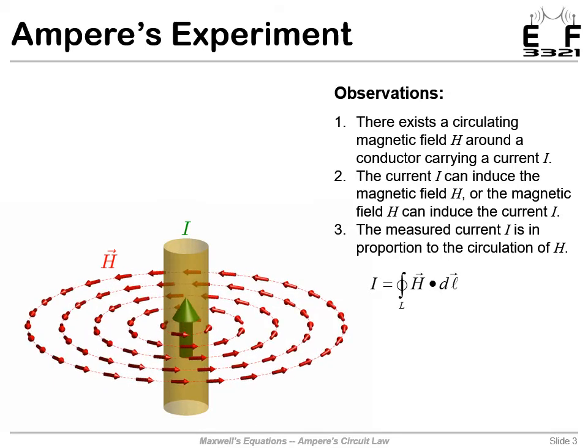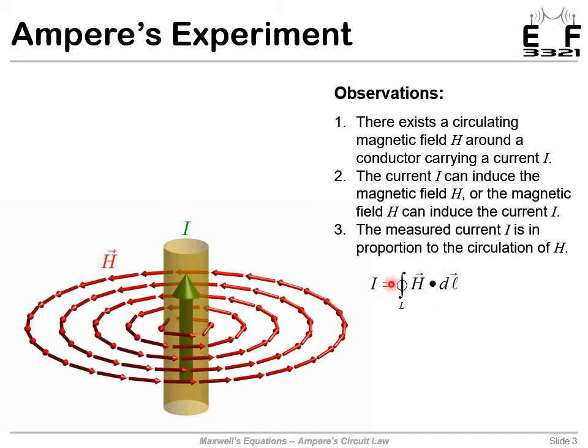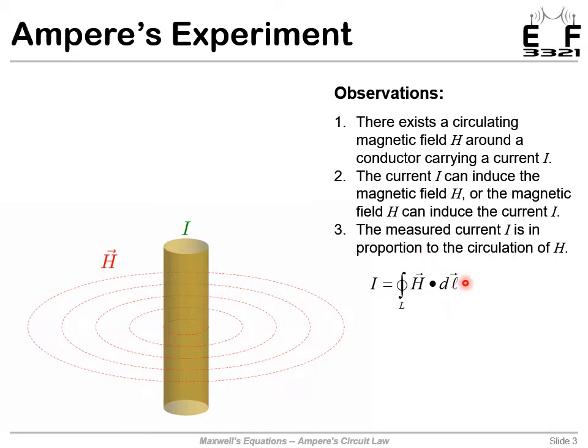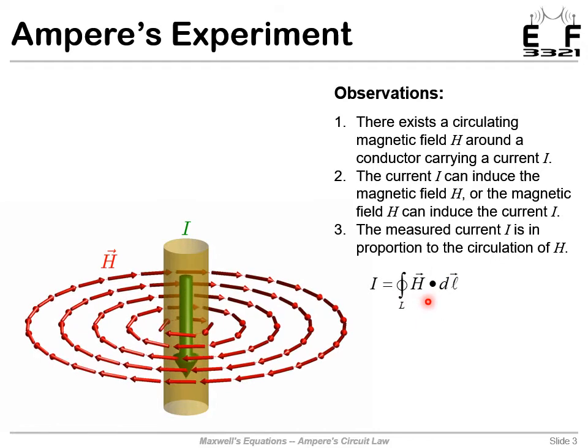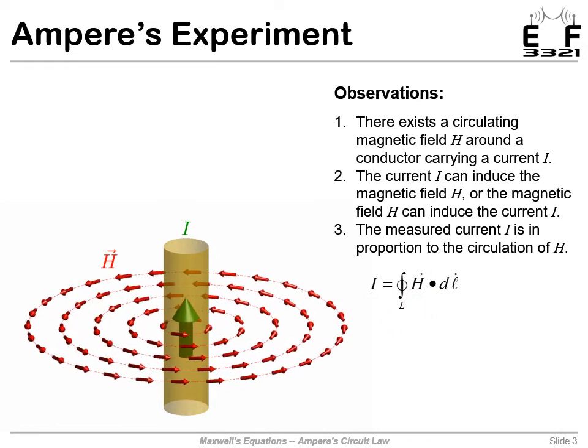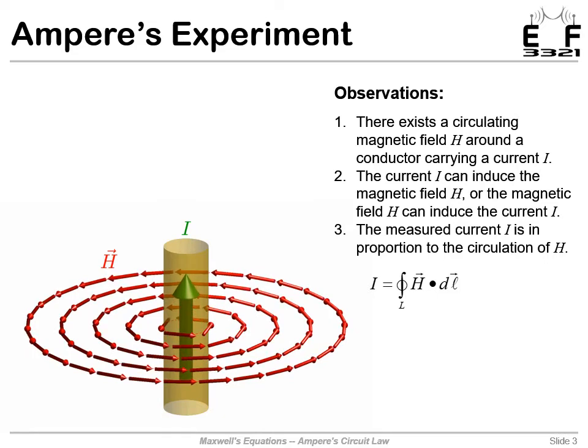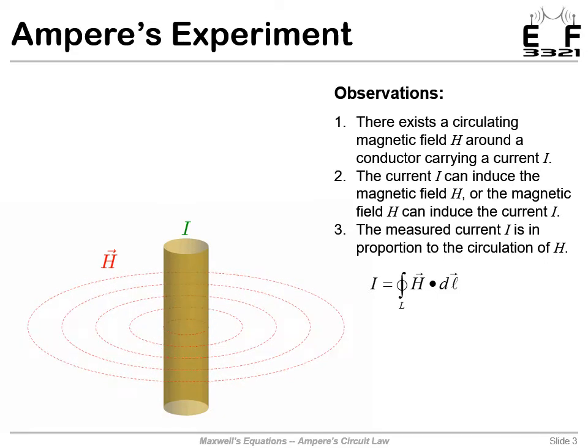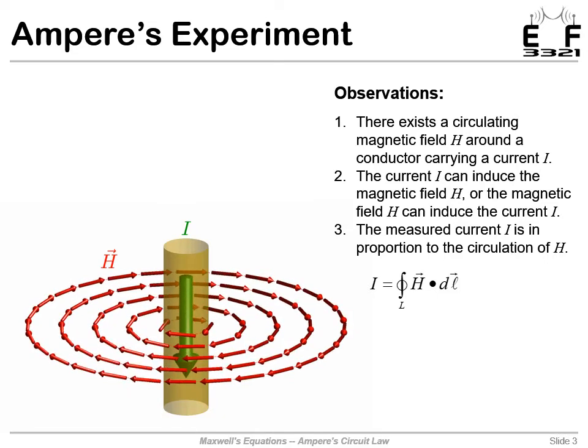We can write an equation. If we do a line integral, adding up the total strength of the circulation of the magnetic field, that would give us the total current enclosed within that line integral. This is a concept we'll pick up again when we get to magnetostatics.